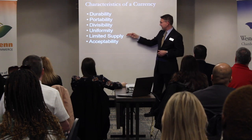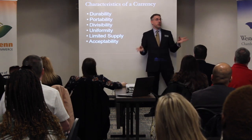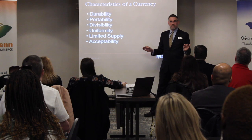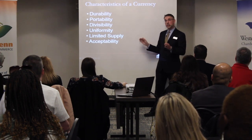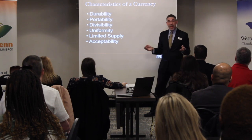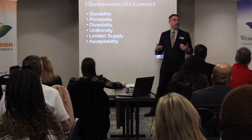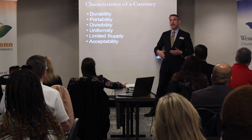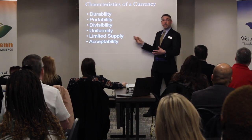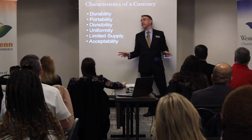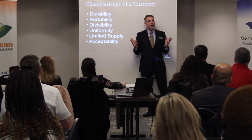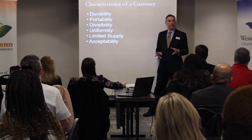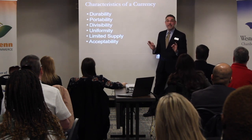On limited supply: interestingly, you can mathematically prove there is a fixed amount of Bitcoin that will ever be created — this was in the original paper. That's why relating it to gold is a little better, but even gold we can mine more of if the price gets high enough. Bitcoin will only ever have a fixed number — in the 20 millions — that will ever be created. It's mathematically provable, and that's one of the very key features of Bitcoin.